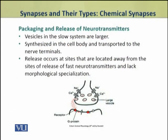The neurotransmitters involved in slow chemical synapses are packed in vesicles which are larger in size than those involved in fast chemical synapses. These neurotransmitters are synthesized in the cell body and transported to the nerve terminals. They are released from sites located far away from the sites of release of fast neurotransmitters.